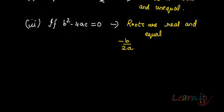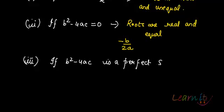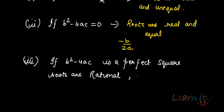The third case is when b squared minus 4ac is a perfect square. If it is a perfect square, a whole number comes out of the square root and the roots are rational. If it is not a perfect square, then an irrational number remains under the root, so the roots are irrational.